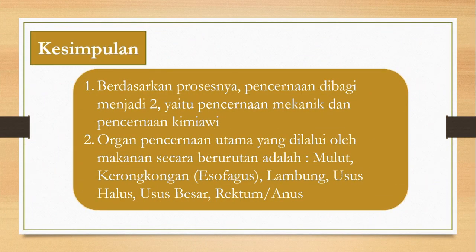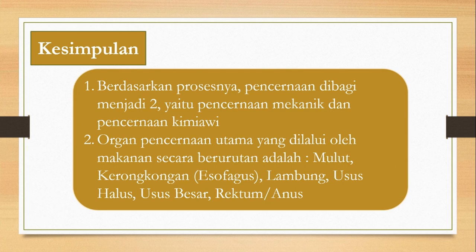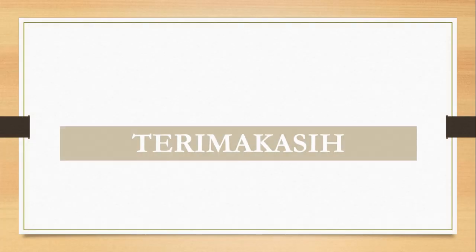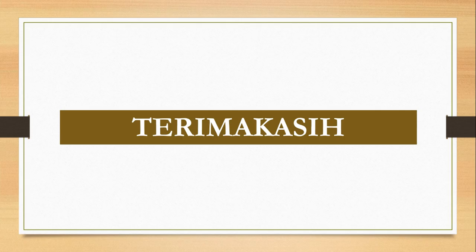Itulah penjelasan tentang organ pencernaan pada manusia. Kesimpulan pembelajaran kita pada hari ini: pertama, berdasarkan prosesnya pencernaan dibagi menjadi dua yaitu pencernaan mekanik dan pencernaan kimiawi. Kedua, organ pencernaan utama yang dilalui oleh makanan secara berurutan adalah mulut, kerongkongan atau esofagus, lambung, usus halus, usus besar, rektum, dan anus. Mudah-mudahan apa yang disampaikan pada hari ini dapat dipahami. Jika ada pertanyaan silahkan tuliskan di kolom komentar Google Classroom kalian. Terima kasih atas perhatian kalian semua, sampai berjumpa di pertemuan berikutnya.